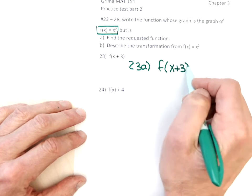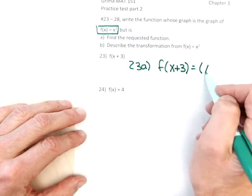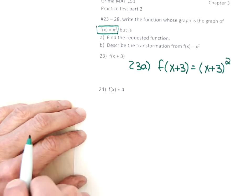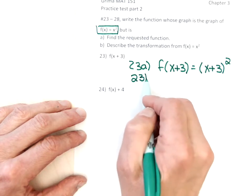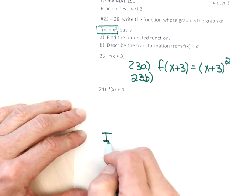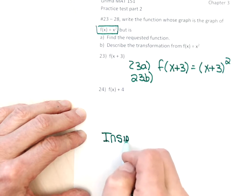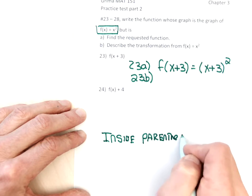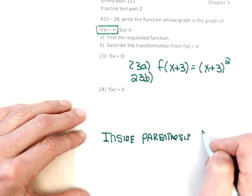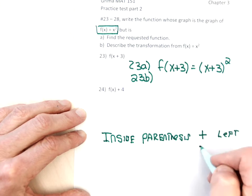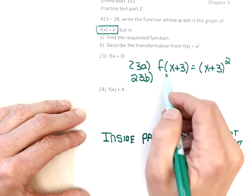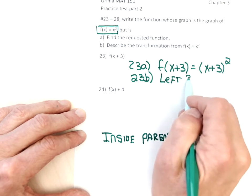For problem 23, to find each function, because the plus 3 is inside the parenthesis, that plus 3 needs to stay inside the parenthesis. You should remember: if you have something inside a parenthesis, plus moves it left, minus moves it right. To describe the transformation, because the plus 3 is inside the parenthesis, it's going to move it left 3.